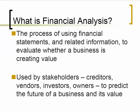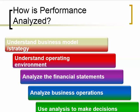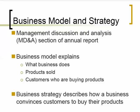Financial analysis is beneficial to a wide variety of stakeholders — creditors, vendors, investors, owners, and other decision makers — on how successful a business is going to be. There is a logical way to look at all the information provided by accountants: first, figure out the forces that affect the business, then analysts look at the financial statements to determine whether a business is successfully operating within those forces. The process of financial analysis has five steps: understand the business model and strategy; understand the operating environment; analyze the content of financial statements; analyze operations; and use the analysis to make decisions.